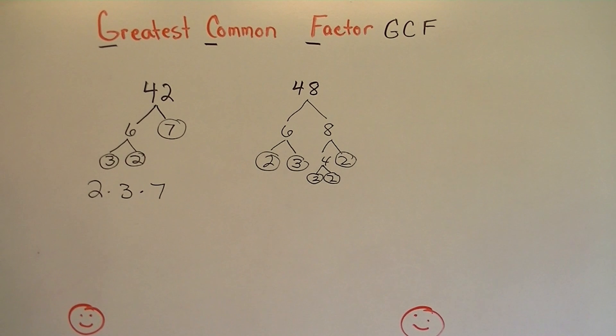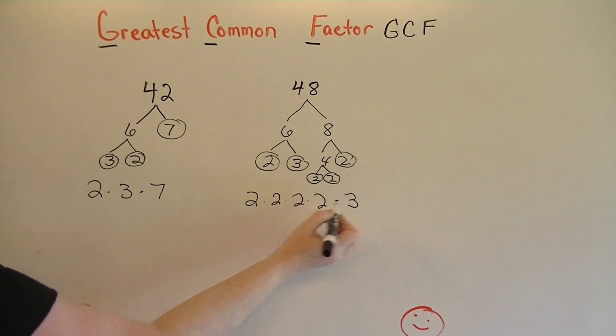And then now we're going to factor 4 again into 2 times 2. So the prime factorization for 48 would be 2 times 2 times 2 times 2, there's four 2's, and then one 3.